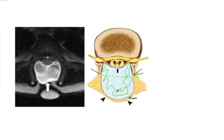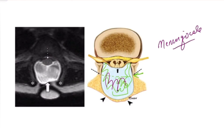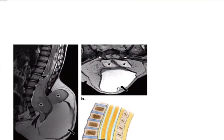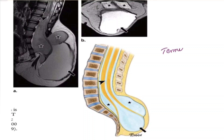In simple meningocele, there is a spina bifida defect in the posterior element with herniation of the meningeal lining and subarachnoid space, but no herniation of neural tissue. These are less symptomatic cases. There can be associated stigmas like cutaneous dysraphia, hemangioma, or tail-like protrusion. There may be redundant nerve roots or hypertrophic filum terminale coursing within the meningocele, but these are usually mild neurological presentations.